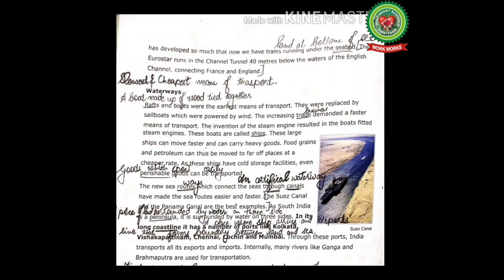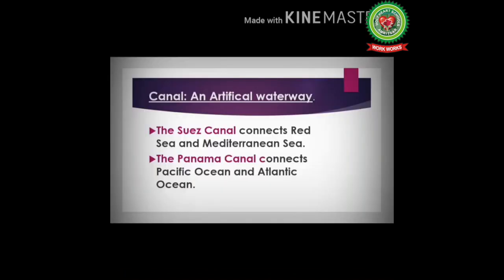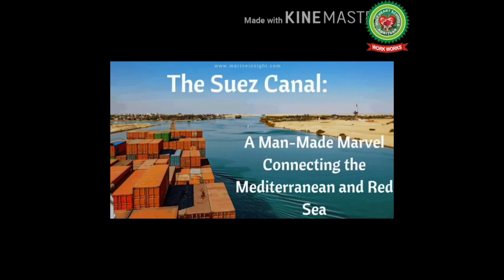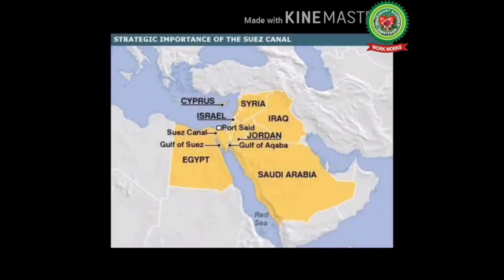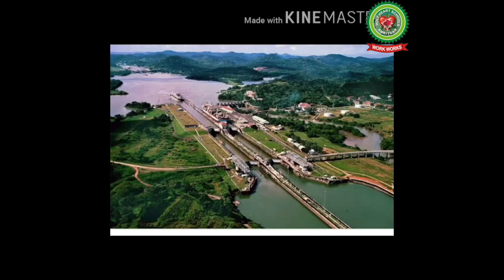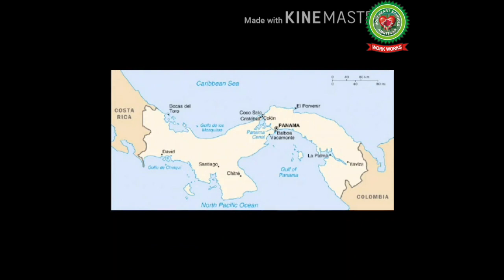New routes connecting seas through canals have made sea routes easier and faster. Mark the meaning of 'routes' — ways — and 'canal' — an artificial waterway. The Suez Canal and the Panama Canal are the best examples. The Suez Canal connects the Red Sea and the Mediterranean Sea, and the Panama Canal connects the Pacific Ocean and the Atlantic Ocean. The Suez Canal is an artificial waterway at sea level, situated in Egypt. The Panama Canal is an 82-kilometer artificial waterway in Panama connecting the Atlantic Ocean with the Pacific Ocean.